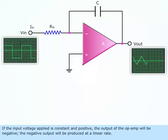If the input voltage applied is constant and positive, the output of the op-Amp will be negative. The negative output will be produced at a linear rate.